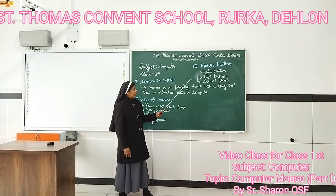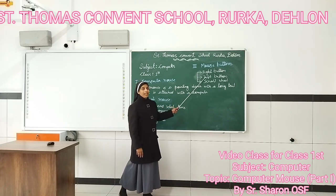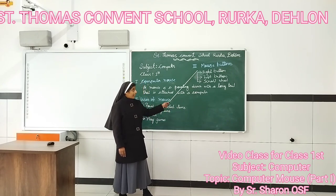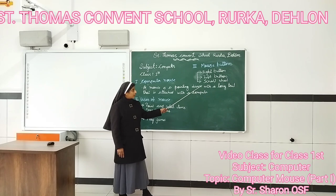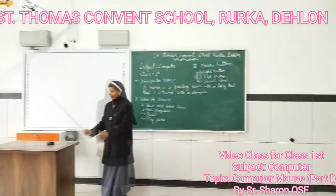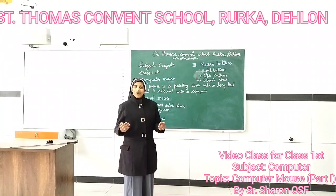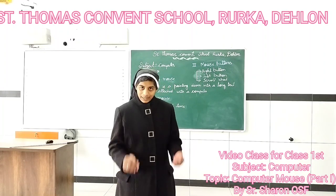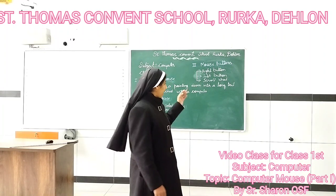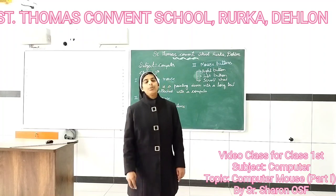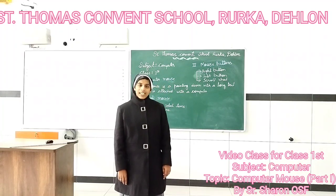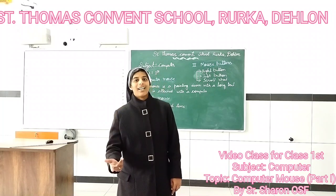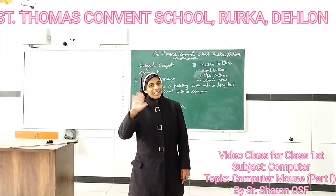The buttons of the computer mouse are: right button, left button, and scroll wheel. Now we have studied what is computer mouse. Write it in your computer notebook two times. We can study about computer mouse more in the next class. Till then, bye bye.